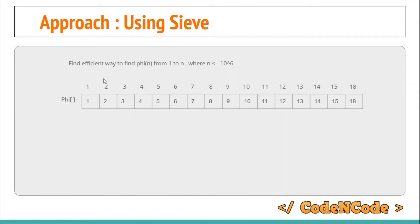We start from i = 2, as we do in the sieve algorithm. The first number where the value stored at that index equals the index itself is 2 — which means it is prime. So we go to all multiples of 2 and divide the stored result by 2 then multiply by 1 — that is, divide by the prime p = 2 and multiply by (p-1) = 1. So i loops over 4, 6, 8, and so on for each multiple of 2.